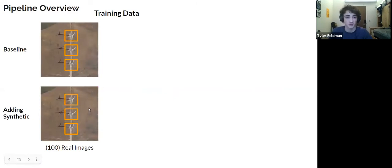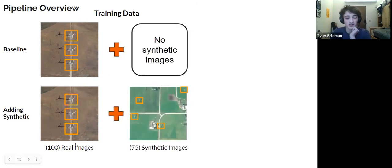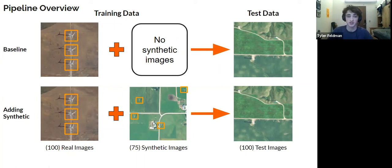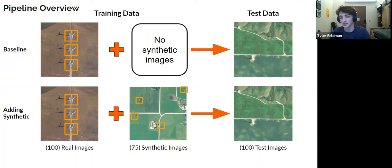We can have two different training datasets. For both of them, we have the same composition of real images, but for the second dataset, we add in synthetic images. We train the model on these two different datasets and test it. What we expect is that because we add in synthetic images, this helps overcome the issue of a lack of data, and also helps the model generalize to another domain where training and testing images look dissimilar.